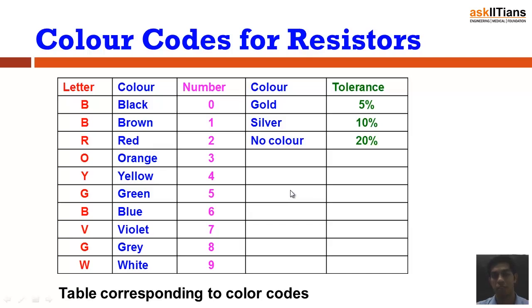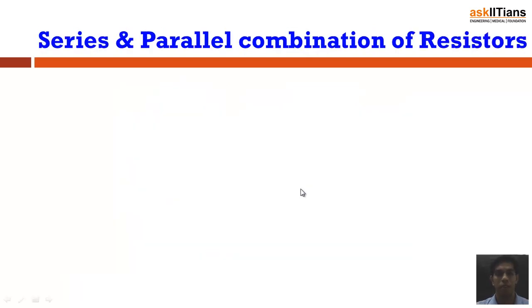With the use of this table, we can find out the value of resistance and its tolerance value of any commercial resistor. So now we will deal with the different combinations of resistors, but we won't be dealing with all the possible combinations of resistors, but only the two simplest combinations of resistors. So first we'll deal with series combination of resistors.